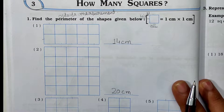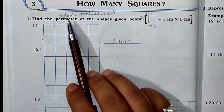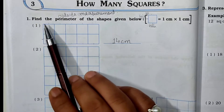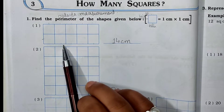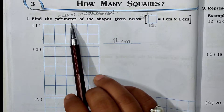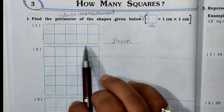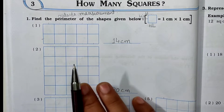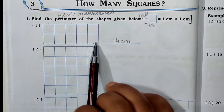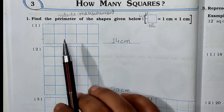The word perimeter means outside measurement. Perimeter means measurement of outside. See Main 1: find the perimeter of the shapes given below. Here the shapes are given, and perimeter means the outside measurement you have to find out.